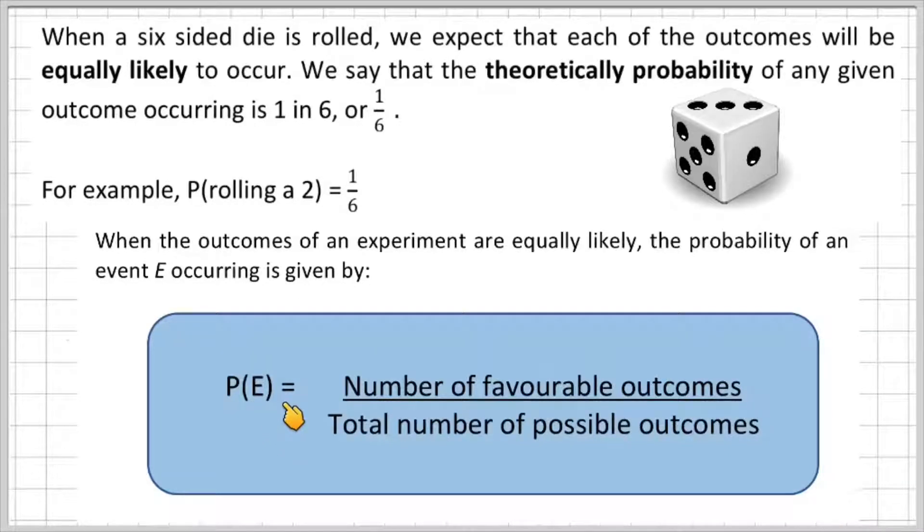the probability of an event E occurring is given by the following formula. Probability of E is equal to the number of favourable outcomes divided by the total number of possible outcomes. Now, you're welcome to pause the video here and write that down because we're going to be using that formula to solve the following questions.